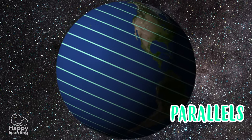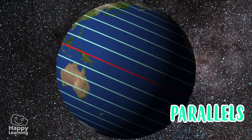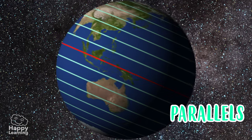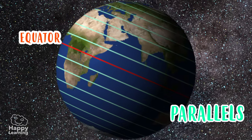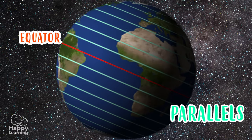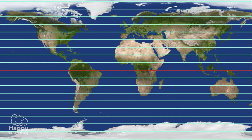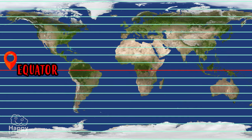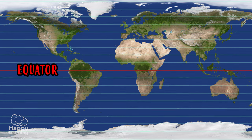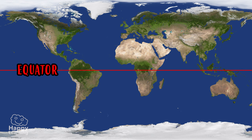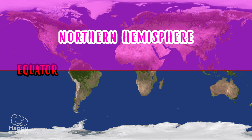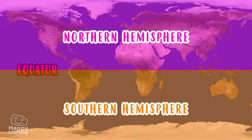The longest horizontal imaginary line is the equator, which you already know. Remember its name, because it's very important for our game today. The equator is the parallel that divides the Earth into two halves: the Northern Hemisphere and the Southern Hemisphere.